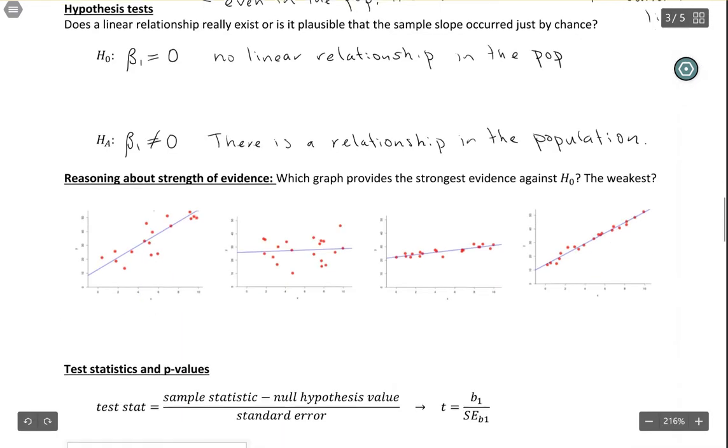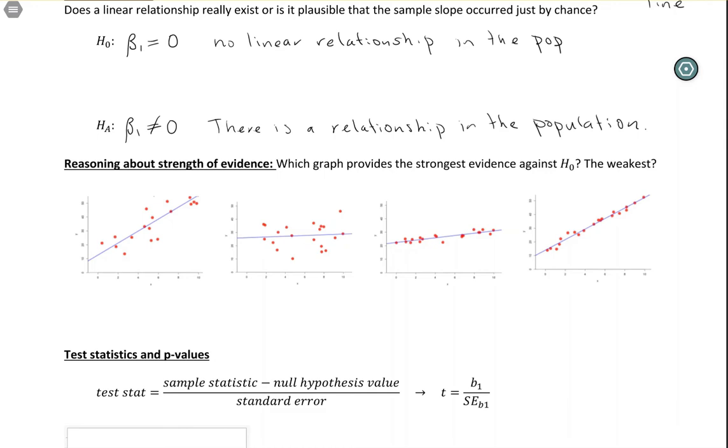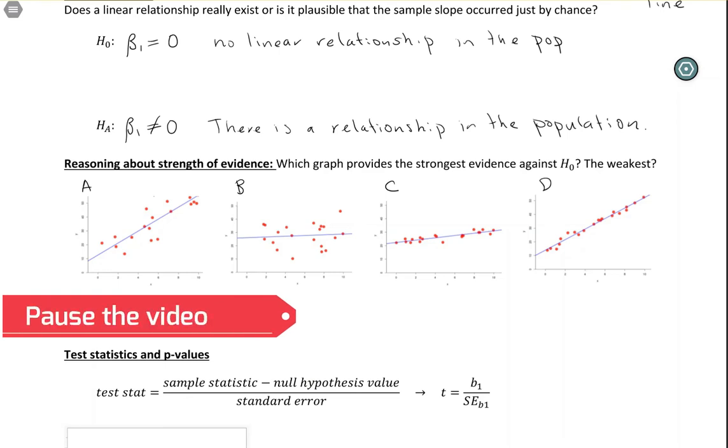Before we get into details, I want you to use your intuition. I have four different graphs—A, B, C, D. Think about which graph provides the strongest evidence against the null hypothesis and which provides the weakest, and what about the graph tells you that. Pause the video and think about the strength of evidence.